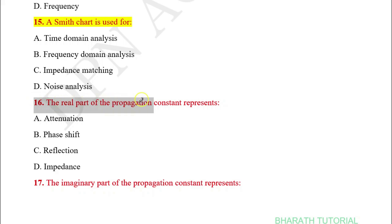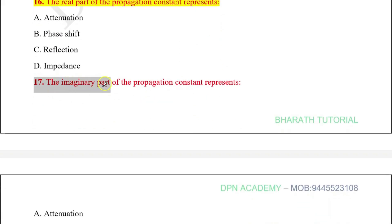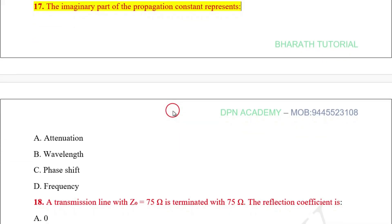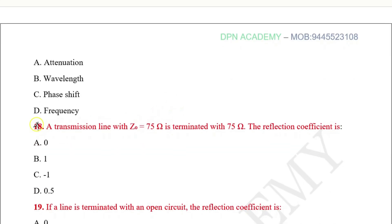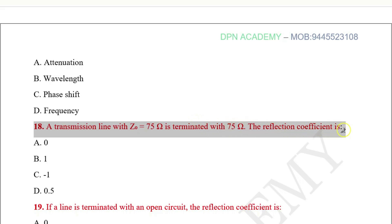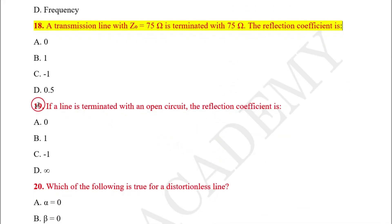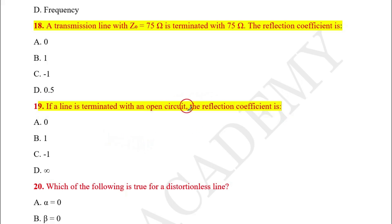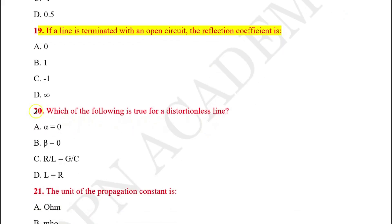Question number fourteen: Impedance matching in transmission lines reduces? Question number fifteen: A Smith chart is used for? Question number sixteen: The real part of the propagation constant represents? Question number seventeen: The imaginary part of the propagation constant represents — this is the most important. Question number eighteen: The transmission line with Z₀ equal to 75 ohm is terminated with 75 ohm — the reflection coefficient is? Question number nineteen: If a line is terminated with an open circuit, the reflection coefficient is? Question number twenty: Which of the following is true for a distortion-less line?